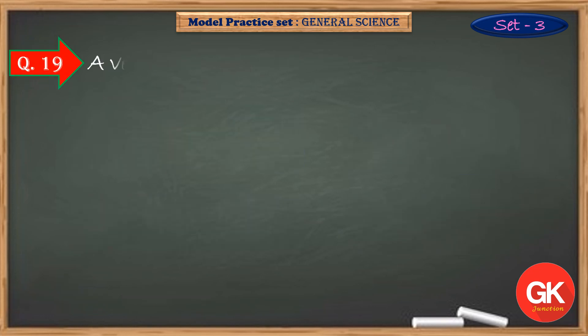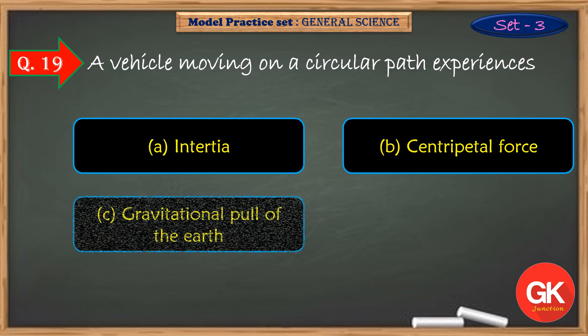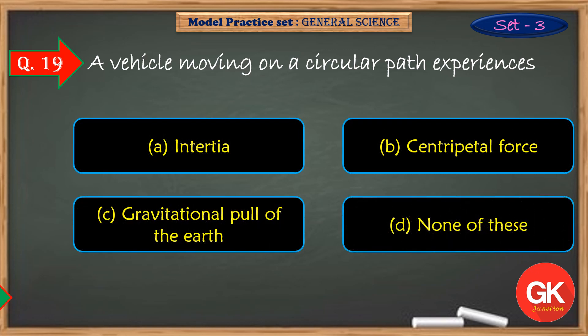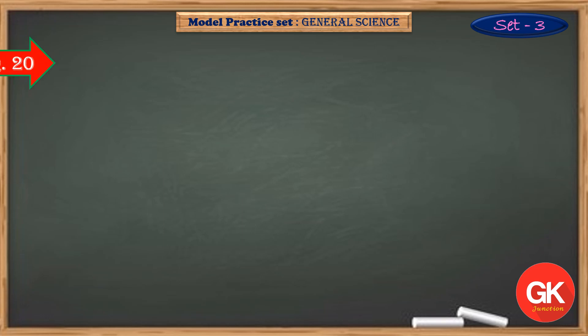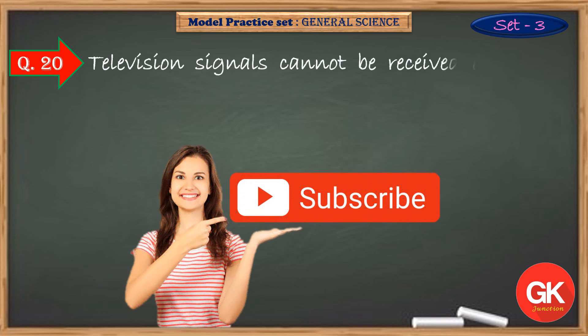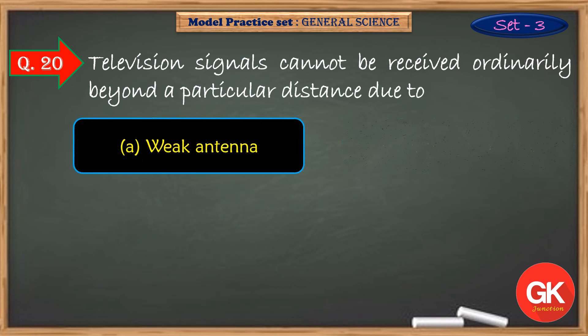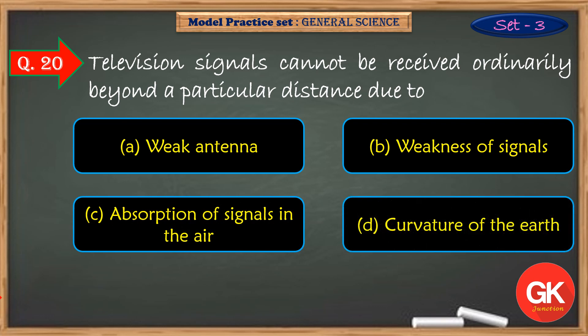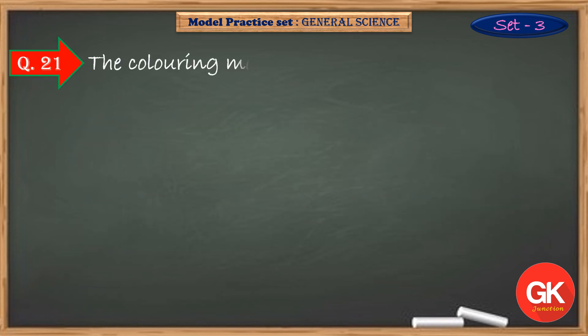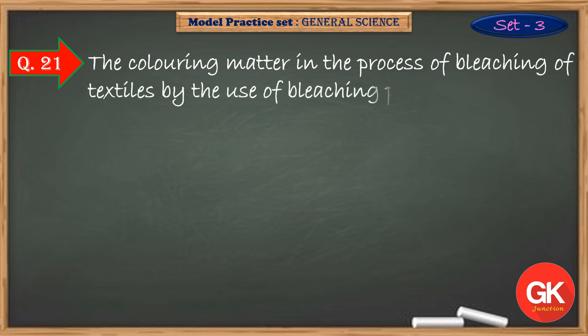A vehicle moving on a circular path experiences. Television signals cannot be received ordinarily beyond a particular distance due to. The colouring matter in the process of bleaching of textiles by the use of bleaching powder gets.